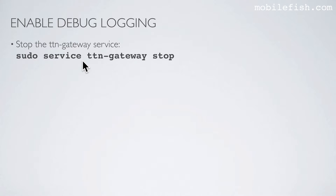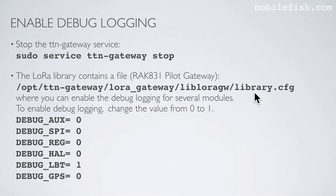To enable debug logging, stop the TTN gateway servers by entering this command. The LoRa library contains a file where you can enable debug logging for several modules. To enable debug logging, change the value from 0 to 1.